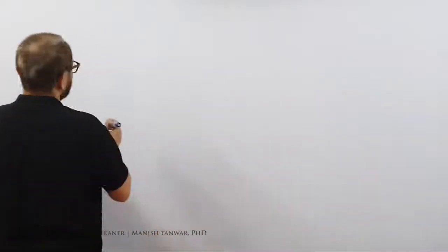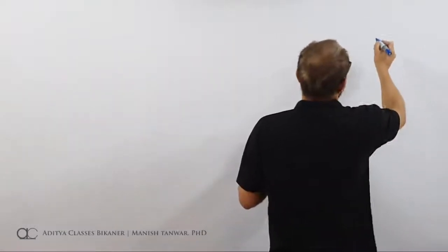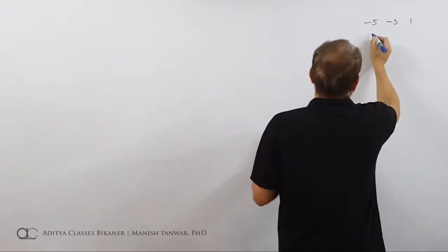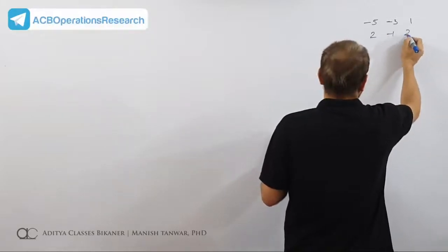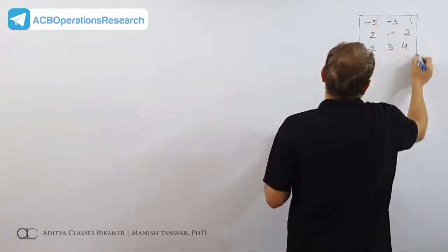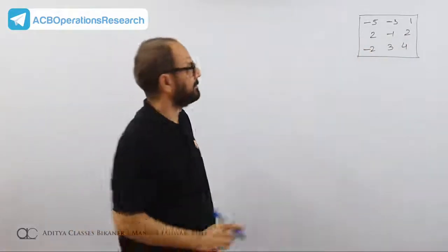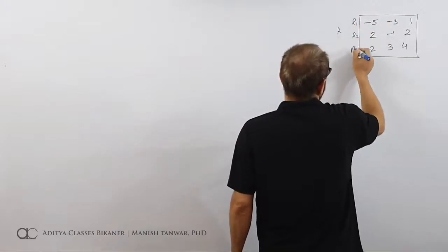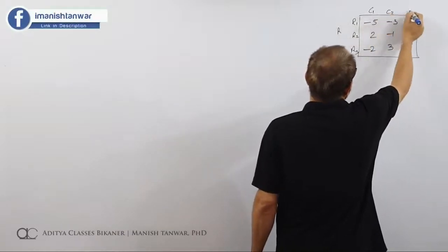Today we will take certain questions and see how dominance plays in, because when a topic is first explained it can become a little confusing. We will start with this question: the matrix has values minus 5, minus 3, 1 in row 1; 2, minus 1, 2 in row 2; and minus 2, 3, 4 in row 3. Let's say we have this game with row player having strategies R1, R2, R3 and column player having strategies C1, C2, C3.